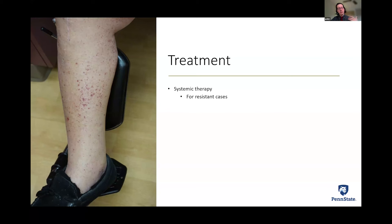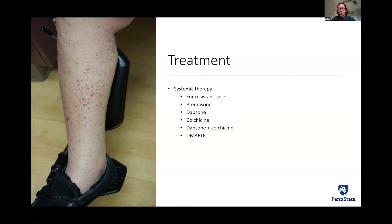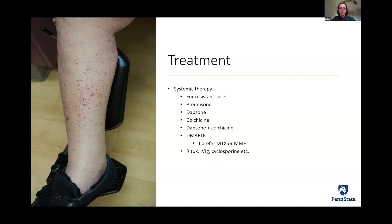For persistent hypersensitivity vasculitis, we consider systemic therapies. Dapsone—a very old antibiotic originally for leprosy—works well. Colchicine, an old gout medication, is also effective. Together they can help without increasing infection risk. For disease that doesn't quit, DMARDs like methotrexate or mycophenolate mofetil are options. Rituximab is often curative for these patients.